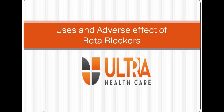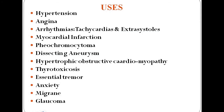All these beta blockers are used mainly in cardiovascular conditions, some neurological conditions, a condition of the eye, and thyrotoxicosis. So they have cardiovascular uses, neurological uses including anxiety, migraine, and tremor, as well as ophthalmic uses for glaucoma.